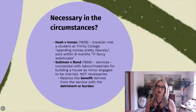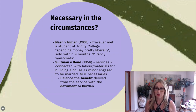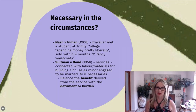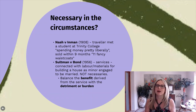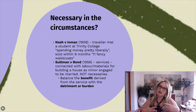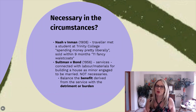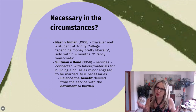In Nash v Inman, the plaintiff's traveller had met with a student at Trinity College Cambridge, and word had gotten around that this poor kid was spending money pretty liberally. They managed to sell him 11 fancy waistcoats in about nine months — getting him into a contract worth more than £120, quite a lot of money for 1908. Was a bunch of fancy waistcoats necessary in the circumstances? Obviously not. Courts also keep one eye on the fact that the contract, if they are going to hold it up, has to be for the infant's overall benefit — the benefit has to outweigh the burden.